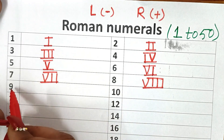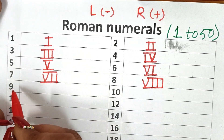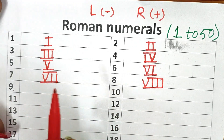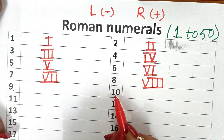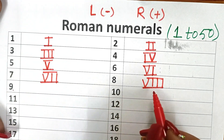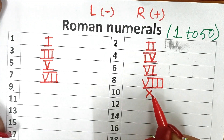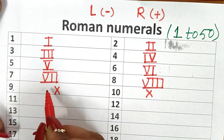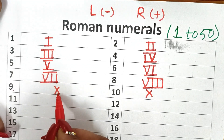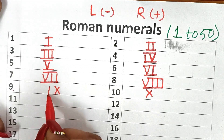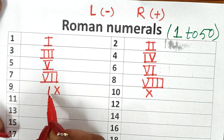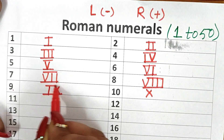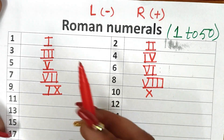Again this is 9. So first you must know how to write 10 before writing 9. How do you write 10? 10 is X. So again if we subtract 1 from 10, I am writing 1 on the left side, means I am subtracting 1 from it. So this is 9. I hope this is clear.